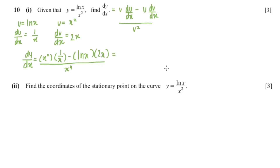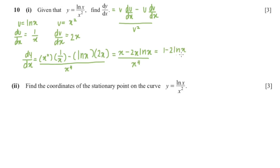That simplifies to x minus 2x·ln(x) over x to the power 4. We can factorize the x out, giving 1 minus 2·ln(x) over x cubed. Now let's look at the next question.